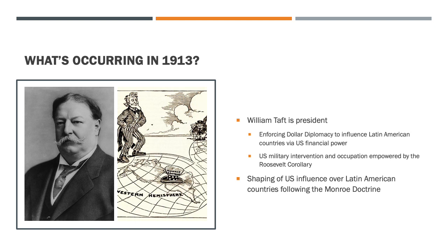Before analyzing the primary source directly, let's keep in mind what was occurring up to the article's publication date, January 1913. It is the last year of William Taft's administration and, with the help of Secretary of State Philander Knox, the enforcement of dollar diplomacy. In short, dollar diplomacy was a foreign policy under the Taft administration that used U.S. financial power to influence Latin American countries, specifically through loan agreements from American banks to control Latin American economies. However, because of the previous president, Theodore Roosevelt, and specifically his Roosevelt Corollary, Taft was enabled to enforce U.S. military intervention and occupation of Central American countries.